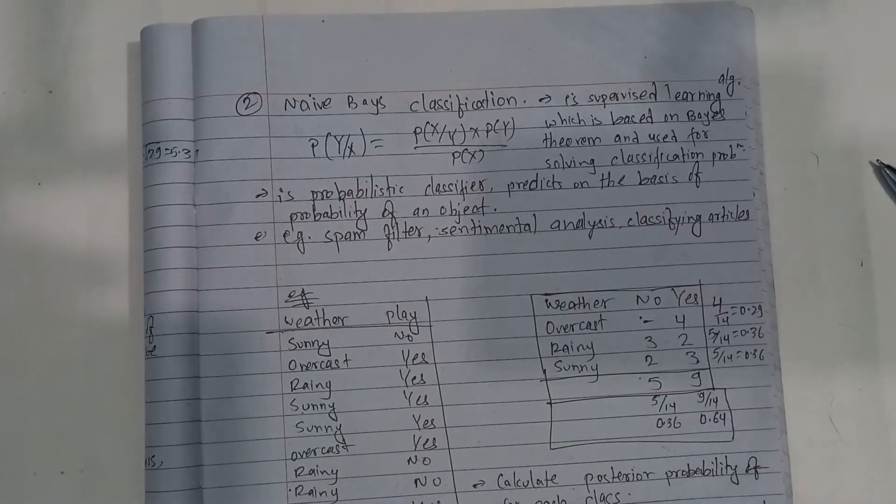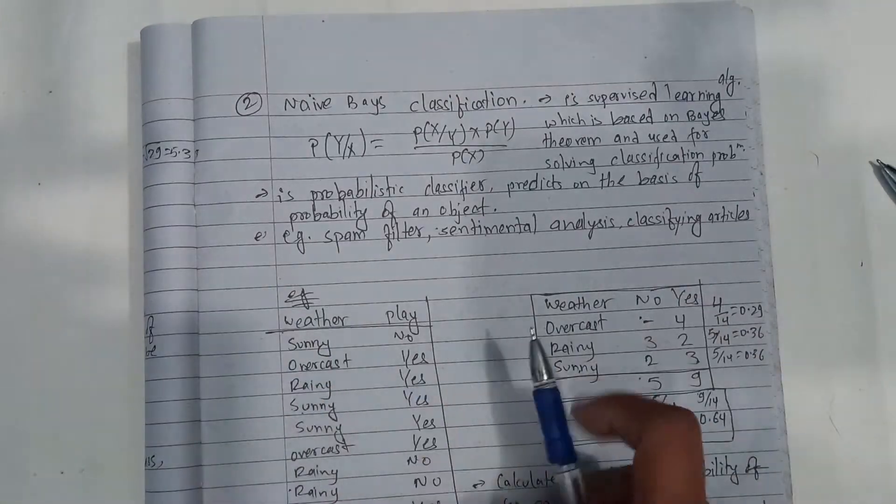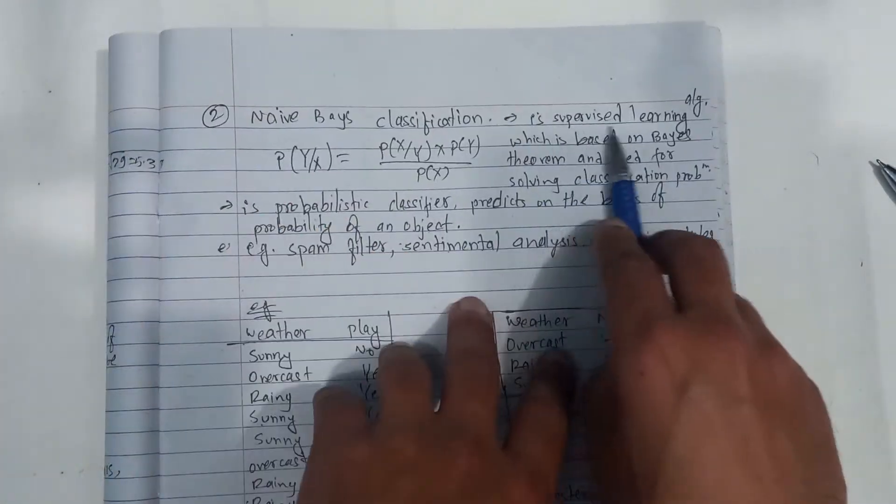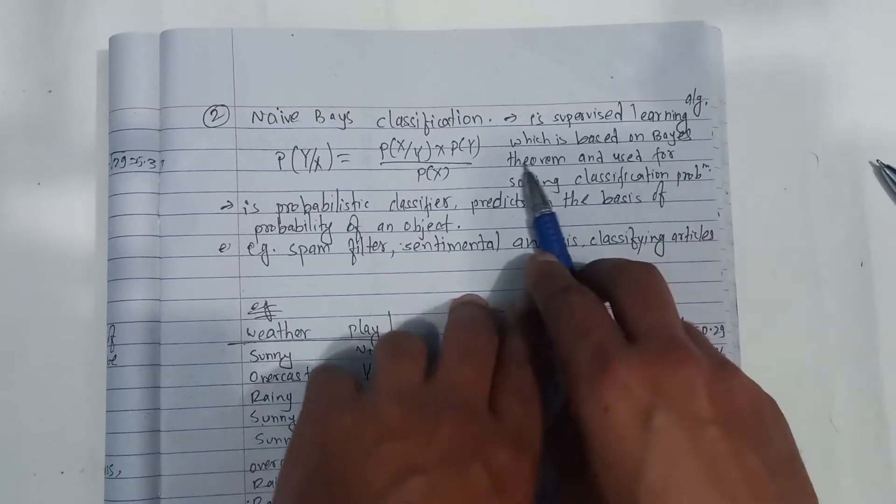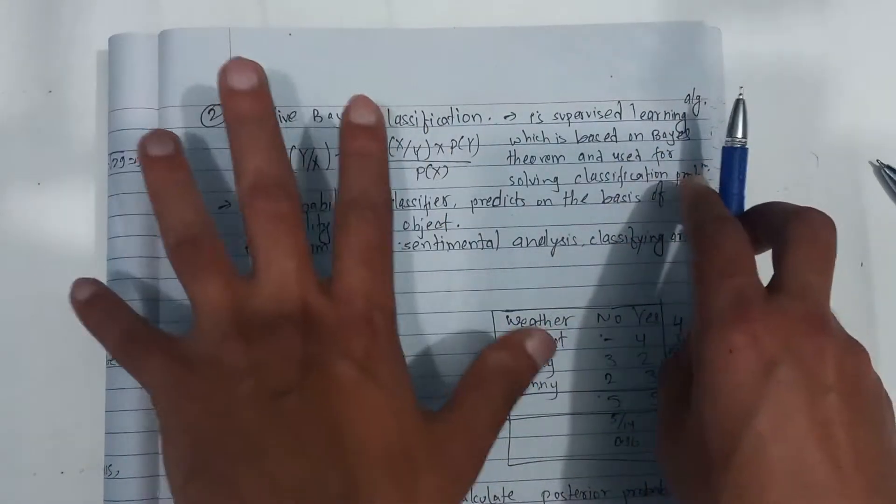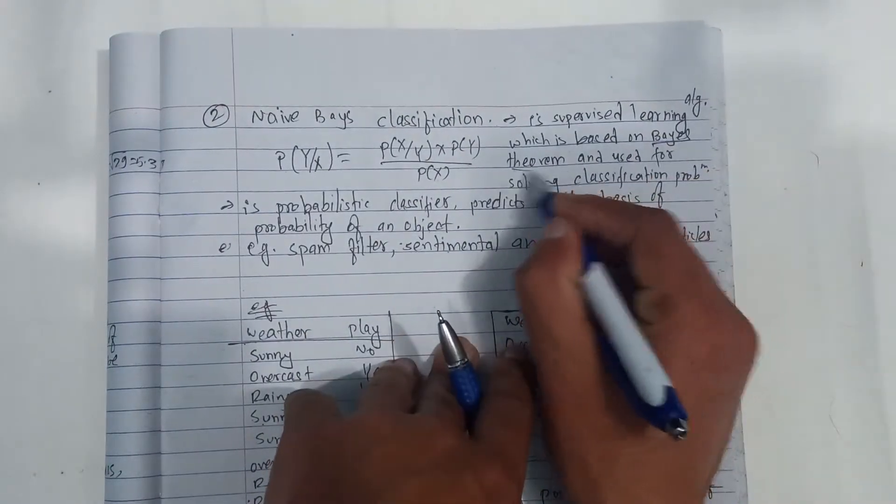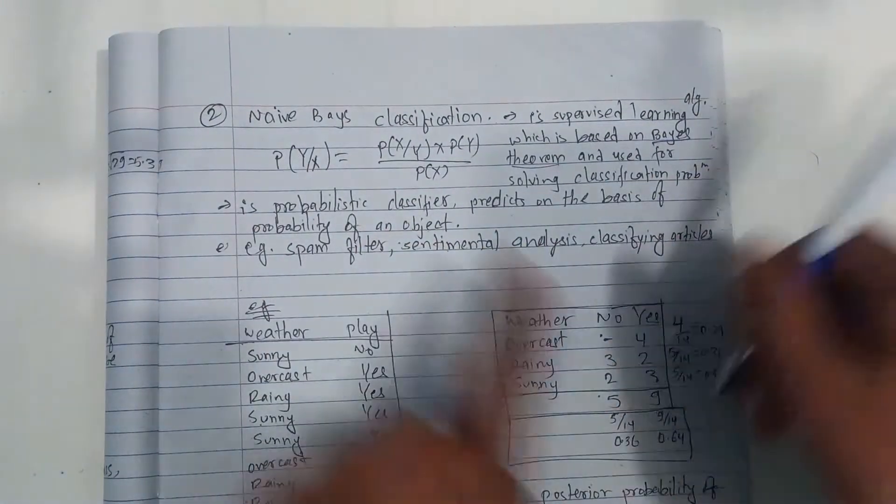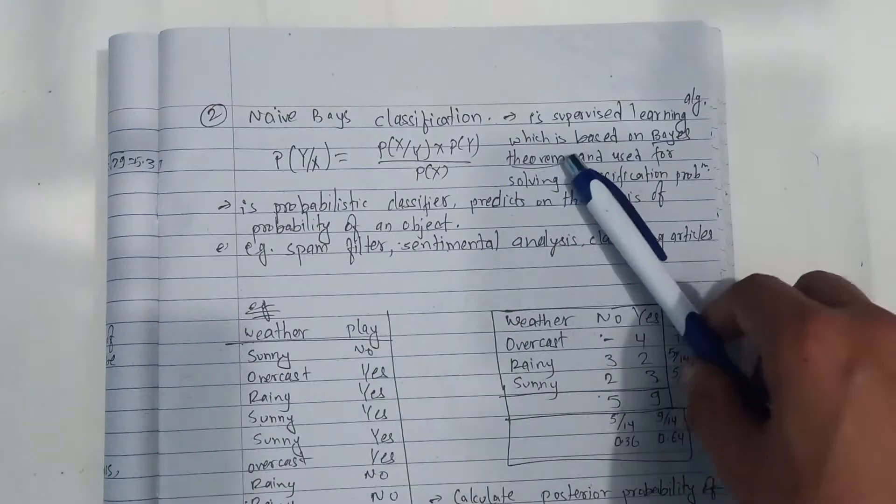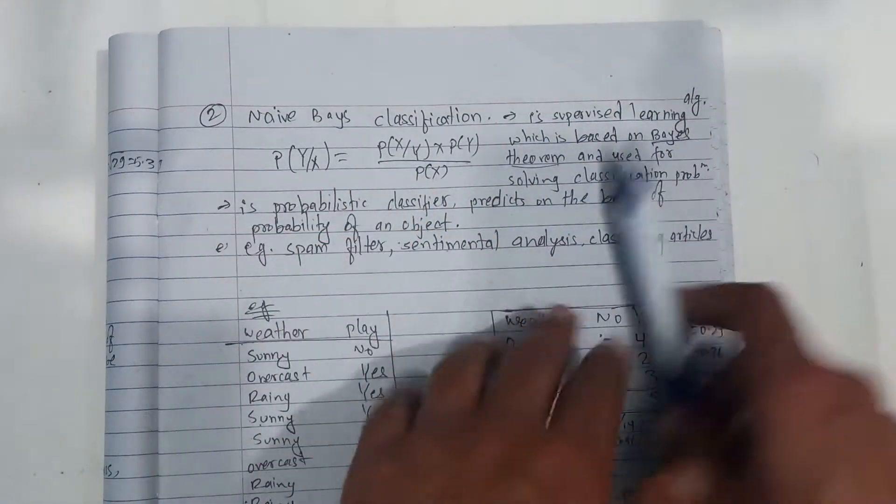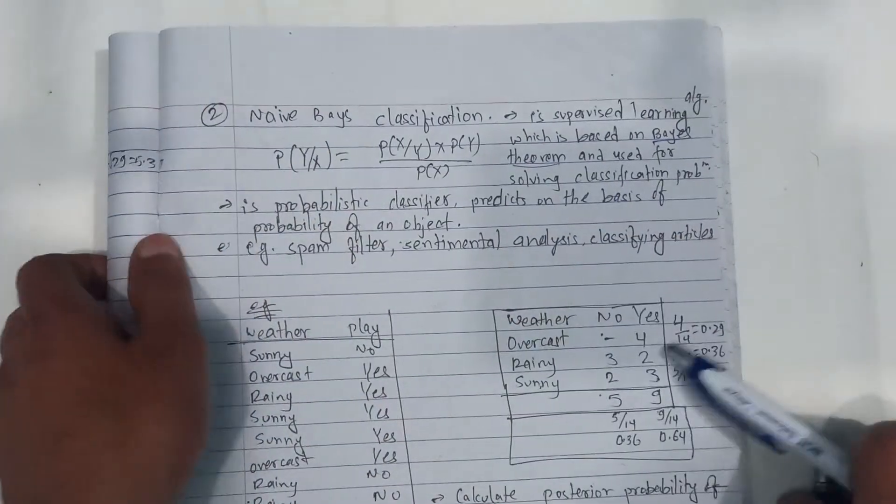Okay, welcome back. I'm going to explain Naive Bayes classification. Naive Bayes classification is a supervised learning algorithm which is based on Bayes theorem. Bayes theorem uses conditional probability for solving classification problems.